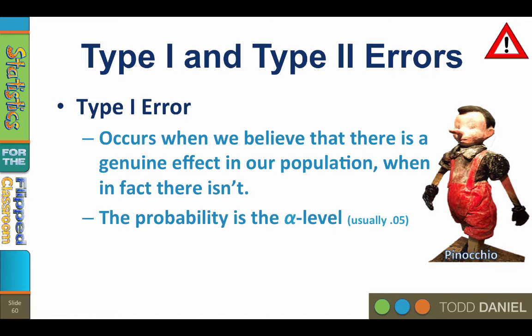A Type 1 error occurs when we say that there is a genuine effect in the population when in fact there is not. This false positive Type 1 error is defined as rejecting a true null hypothesis, meaning you are saying that a treatment has an effect when it does not. Type 1 errors are serious because you are falsely reporting a treatment effect that does not exist. Research journals are greatly displeased with Type 1 errors because it looks a lot like lying. So to remember what a Type 1 error is, think about Pinocchio — when he tells a lie, his nose grows, and his long nose reminds you of the number 1. Lying, saying that an effect exists when it does not, is a Type 1 error.